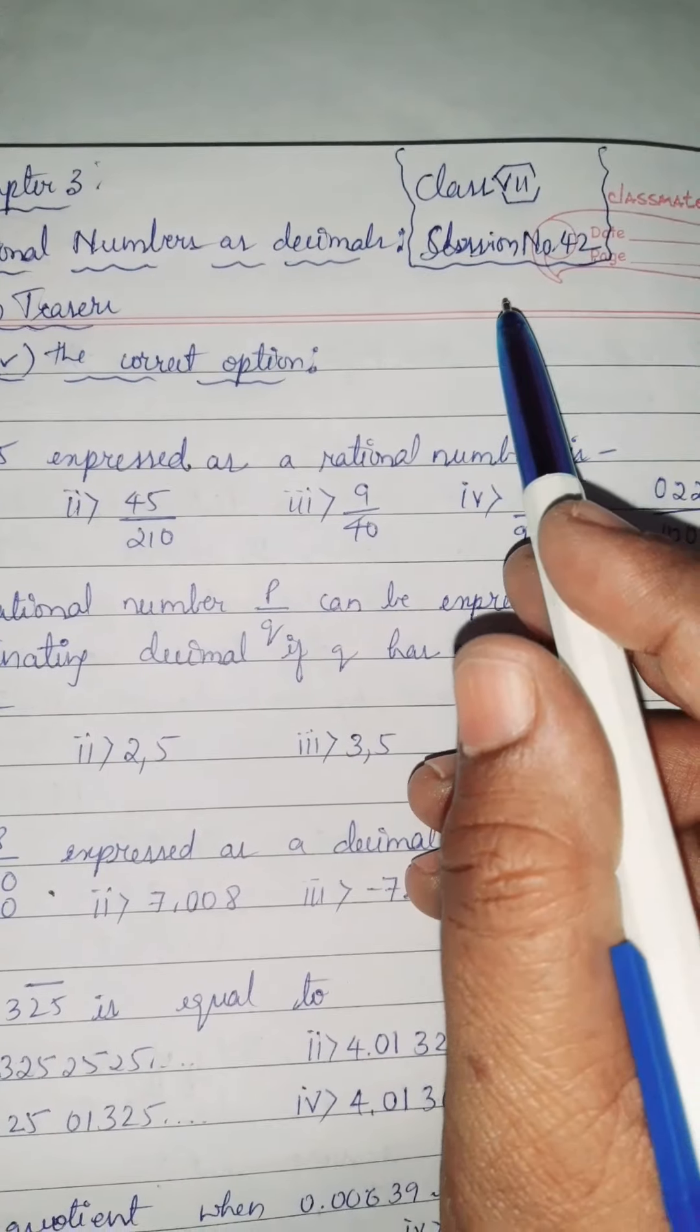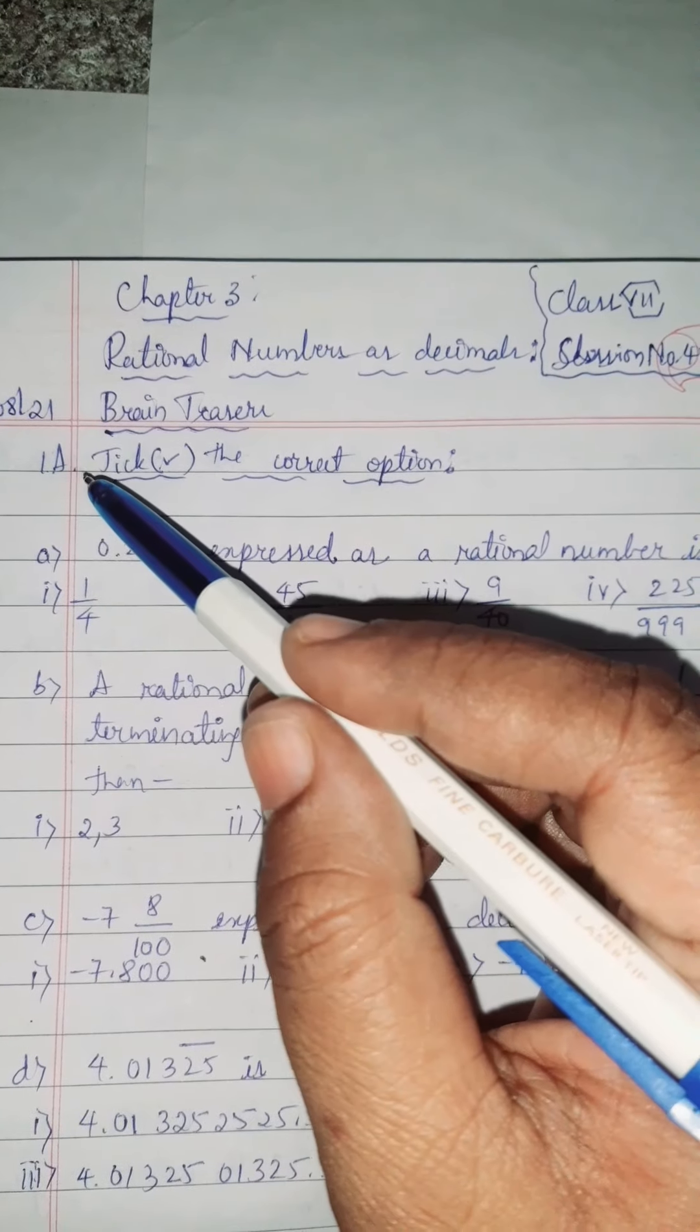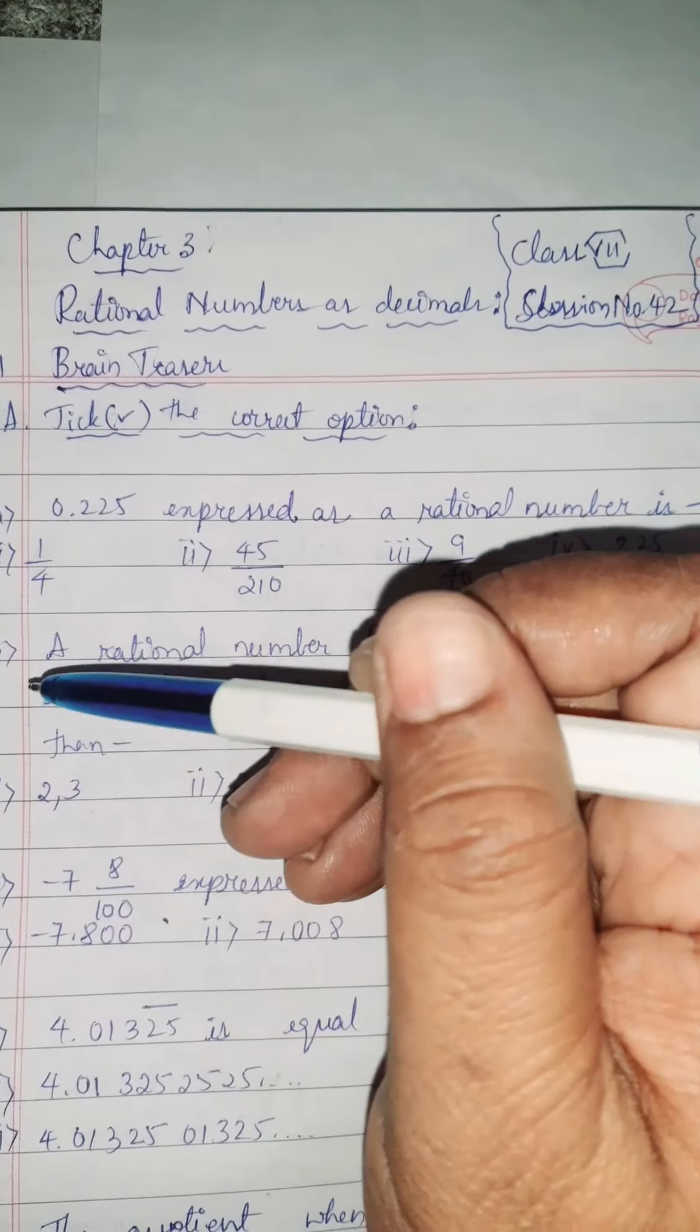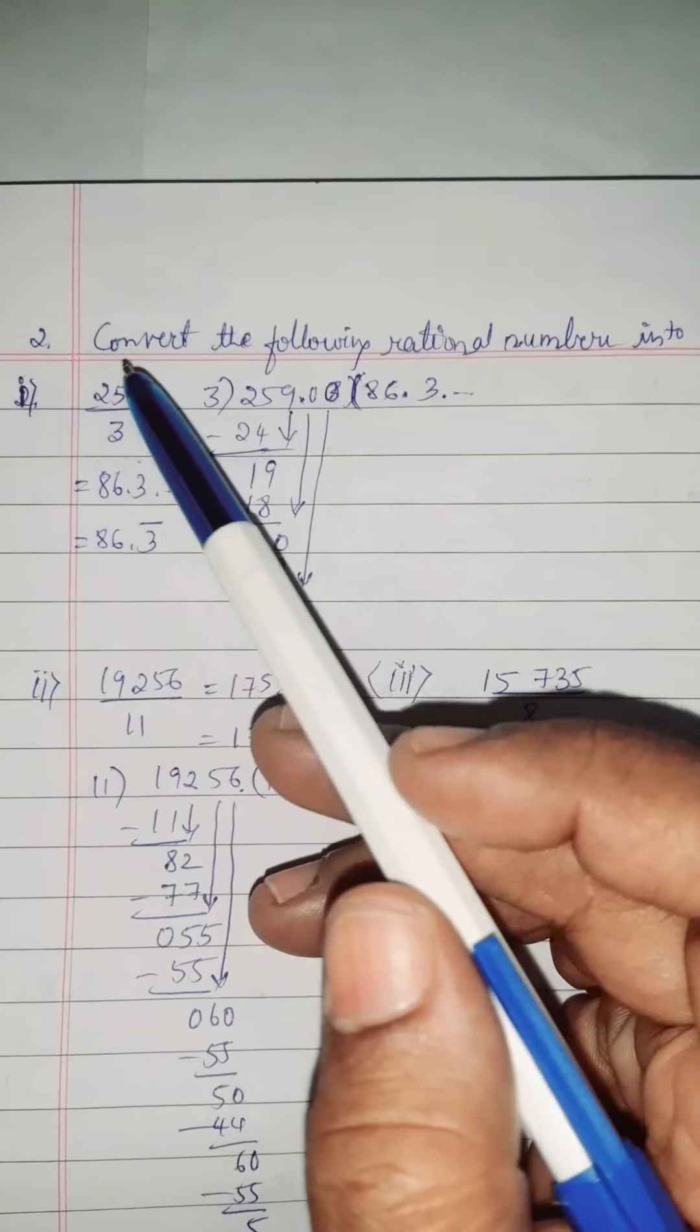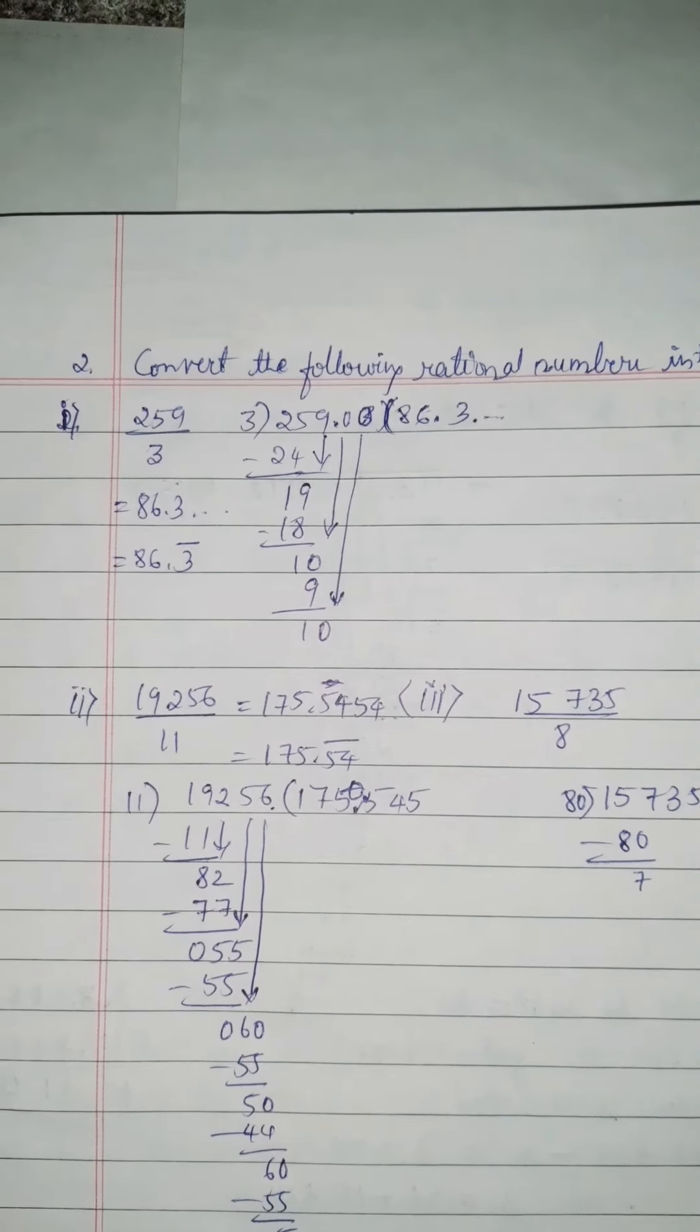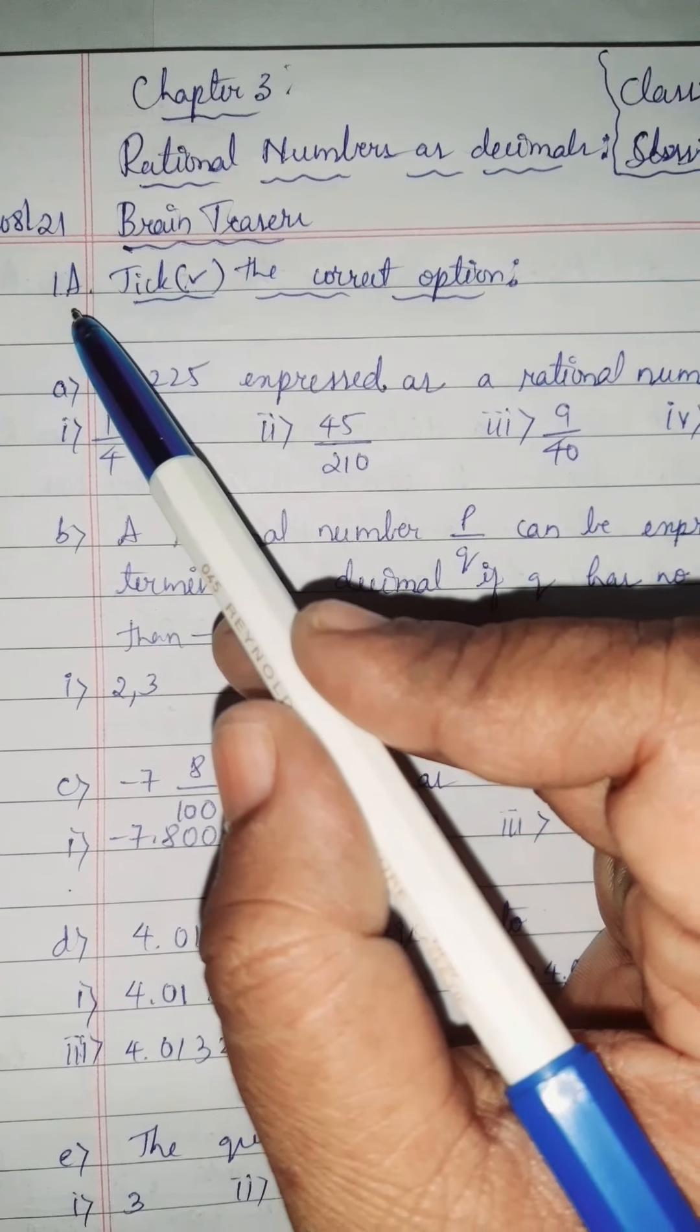Namaste children, in this session number 42, we are going to discuss brain teasers first main A question, B question, and in second main, we are going to solve two sub questions children. Let us start with the first main A question.